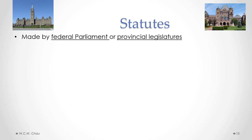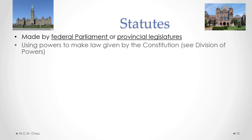Statutes are laws made by either the federal parliament in Ottawa or a provincial legislature. The provincial legislature for Ontario is located at Queen's Park in Toronto. Parliament and provincial legislatures exercise the law-making powers given to them under the Constitution's Division of Powers. Any statute will have the word 'Act' at the end — so any time you see the word 'Act,' you know it's a statute. For example, the federal parliament created a statute governing banking in Canada called the Bank Act.